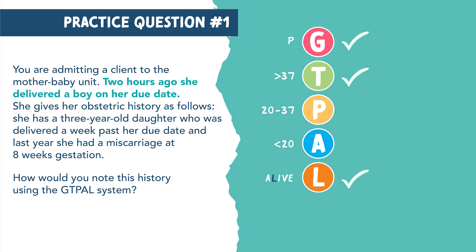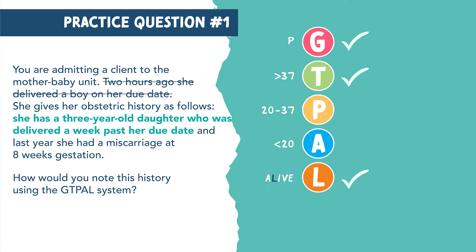I'm going to cross that statement out to tell myself it's already in the tally system. Now for the next sentence: she has a three-year-old daughter who was delivered a week past her due date. We know she was pregnant again — another tally on G. The baby was past the due date, which is still term — another tally on T. And she has another living child — another tally on L.